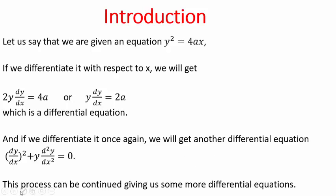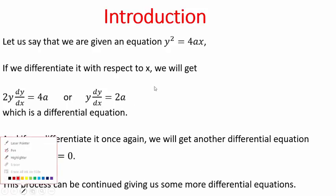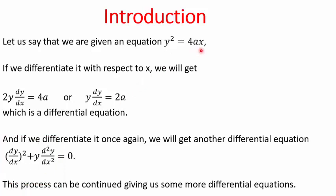Let's say we are given an equation y squared is equal to 4ax, and we differentiate this with respect to x. We get 2y dy/dx is equal to 4a. If you cancel 2, you are left with y dy/dx is equal to 2a. As an end result, what do we have? A differential equation. So this is called a differential equation.